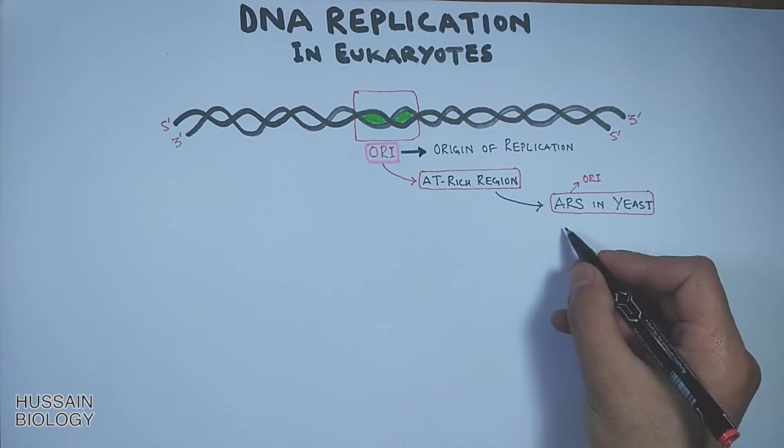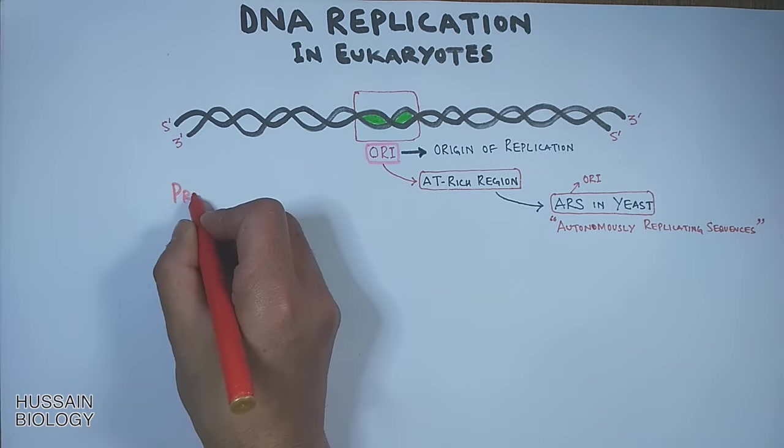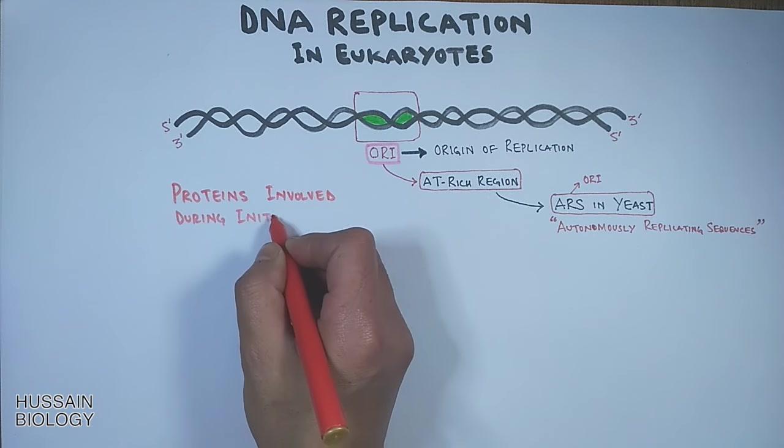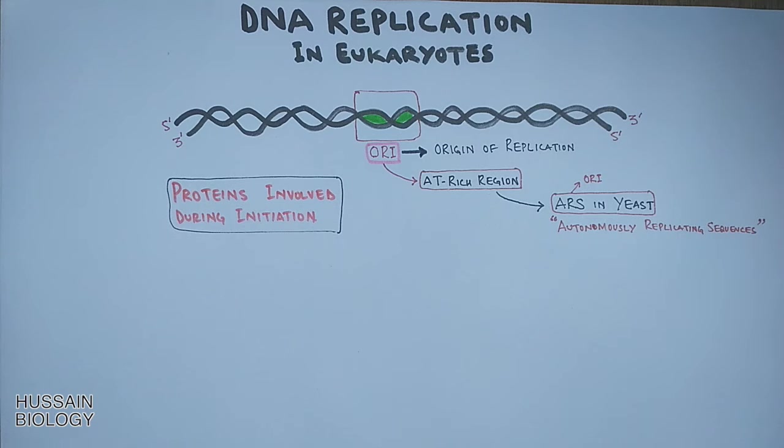Before getting to the mechanism of replication, let's see what are the proteins or enzymes involved in the initiation of eukaryotic DNA replication. First we have ORC protein, a complex protein known as origin replication complex. It binds to ORI site and has ATPase activity. This protein recruits all other proteins for initiation.